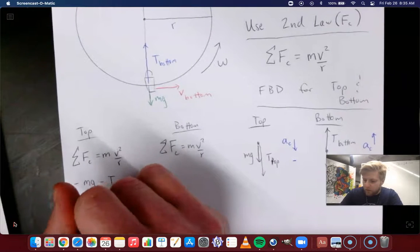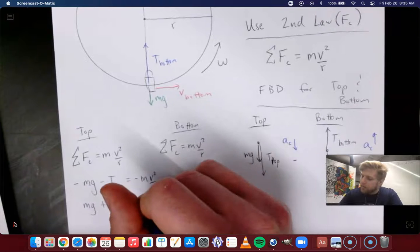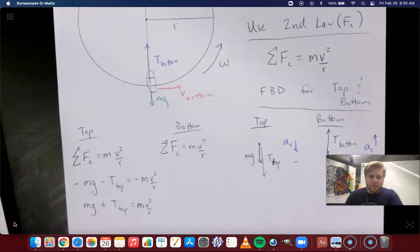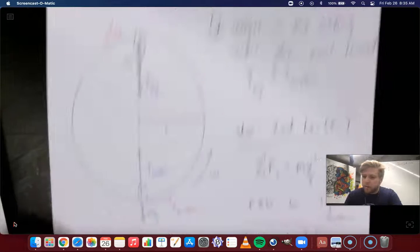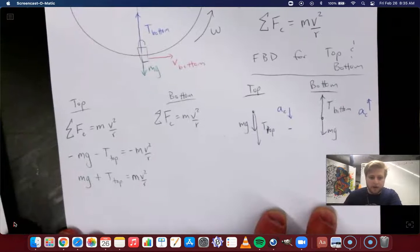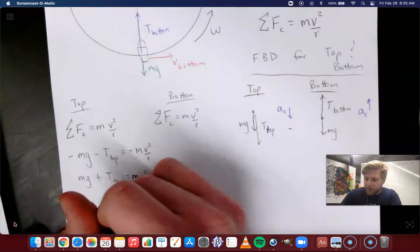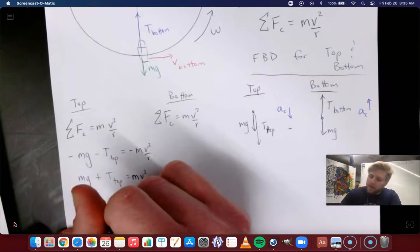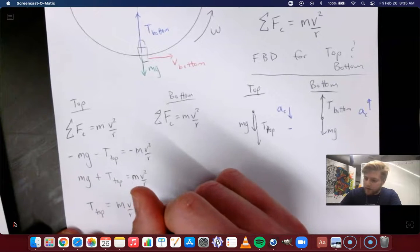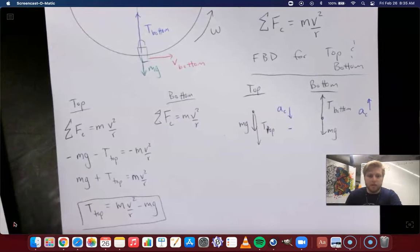Let's go ahead and rewrite that. So this is just mg plus t top equals mv² over r. And this is actually pretty easy. We are trying to find t top so we can compare it to the tension at the bottom. So all I have to do is simply subtract mg from both sides. So t top is equal to mv² over r minus mg. And that's actually it. That is the tension at the top of the loop.